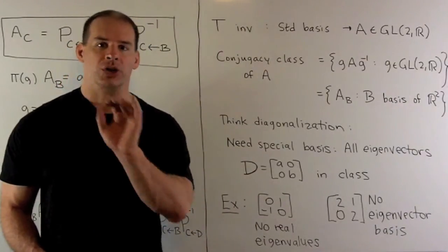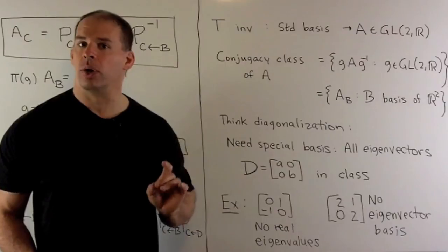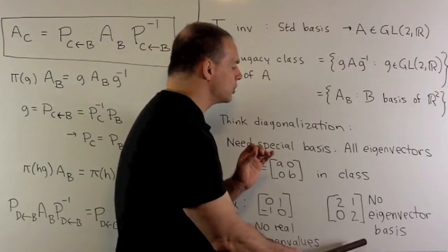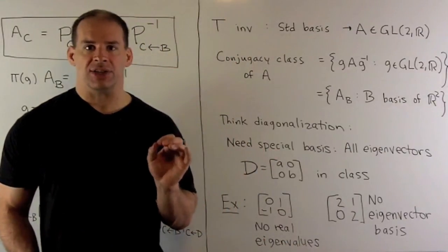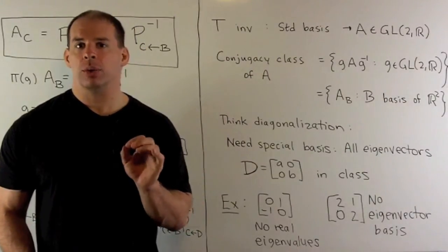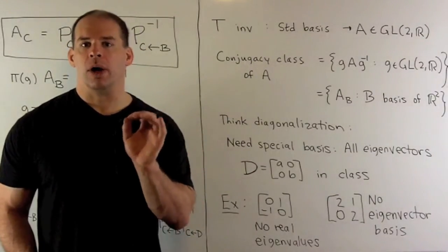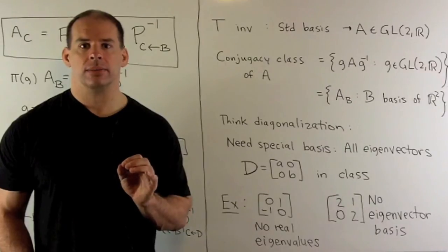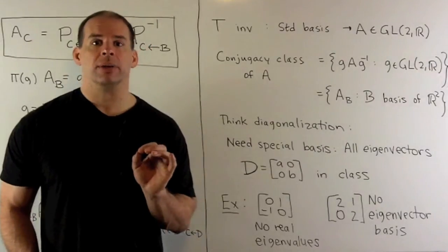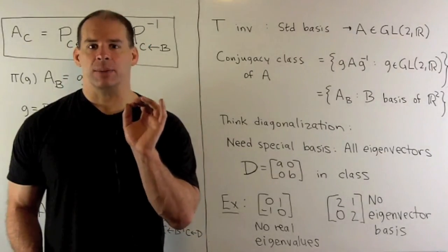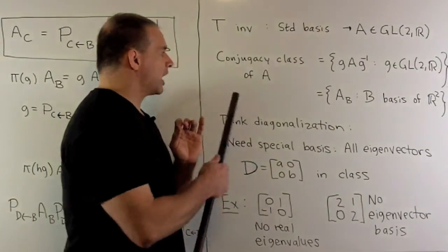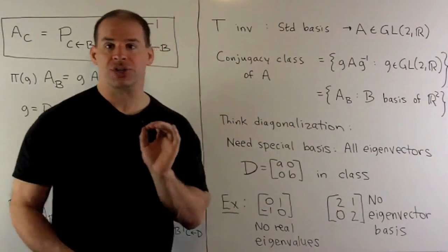This matrix here, we have all real eigenvalues, but there's not going to be an eigenvector basis. So, the idea here is you're going to get an eigenvalue of two with multiplicity two, but only one dimension of eigenvectors. So, this is the game we play in advanced linear algebra. If you can't diagonalize a matrix, then what are going to be the best representatives for your conjugacy class for the matrix that you're given?